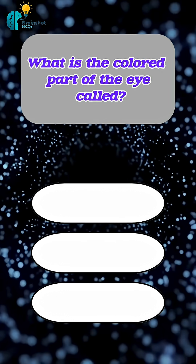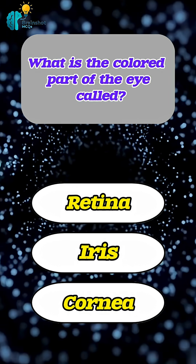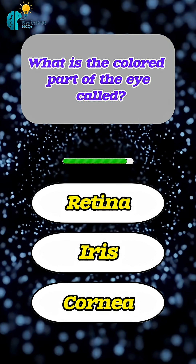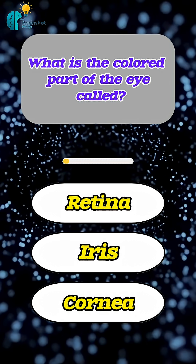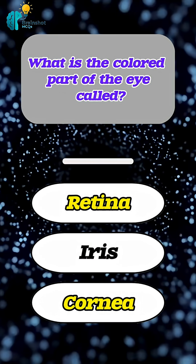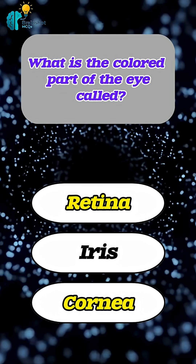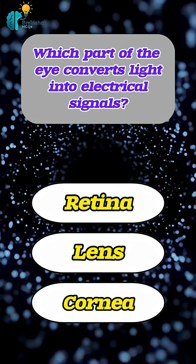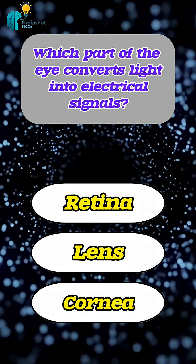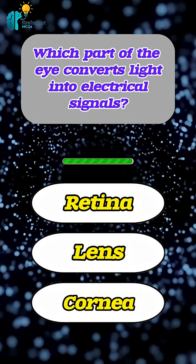What is the colored part of the eye called? Correct answer: iris. Which part of the eye converts light into electrical signals?